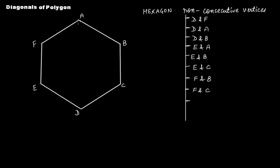Now let's take f — f and b, f and c. Then a — a and e is already done, a and d is already done, so a and c is left. That gives us one, two, three, four, five, six, seven, eight, and nine — we have nine pairs of non-consecutive vertices. Let's connect d and f.